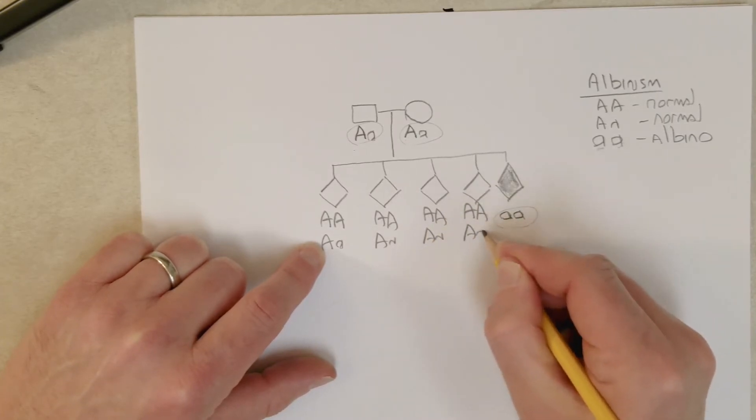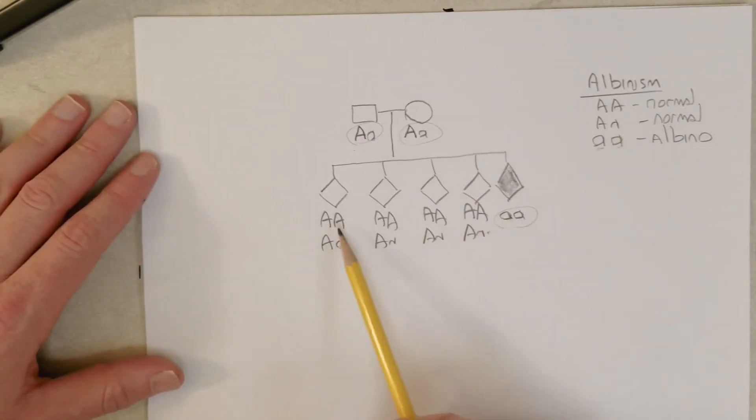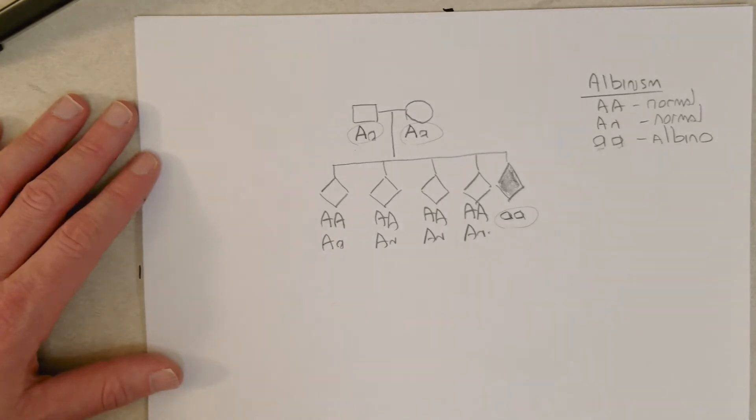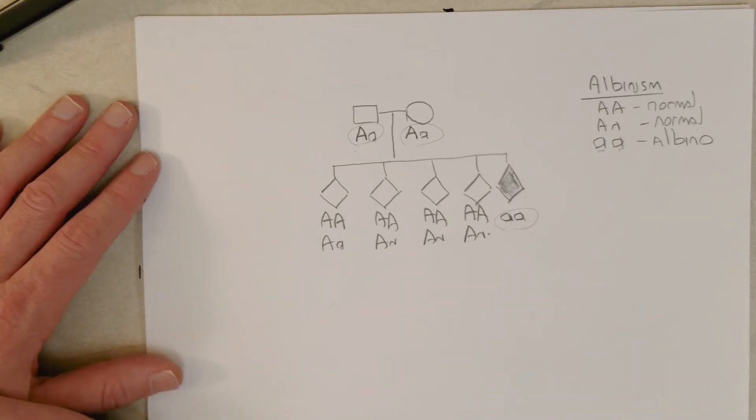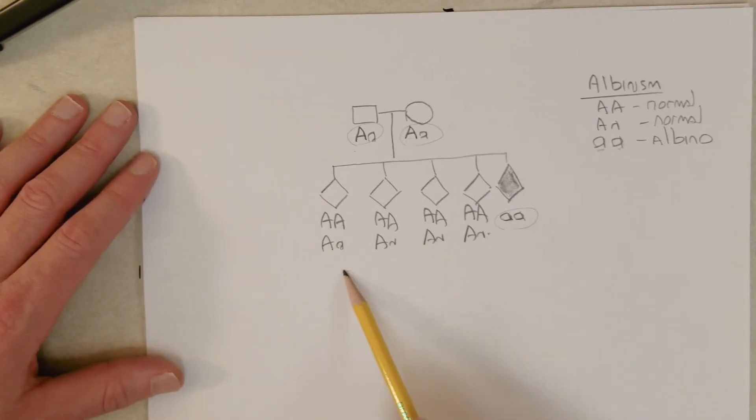So from the pedigree alone we can't determine whether the other children with a normal phenotype are homozygous dominant or heterozygous for this albinism gene here. Okay, so that's it for a pedigree - that's essentially how you interpret those.